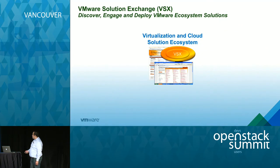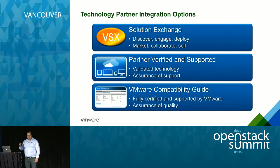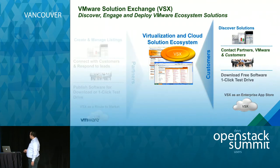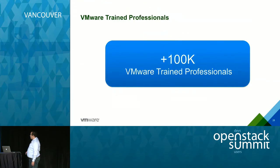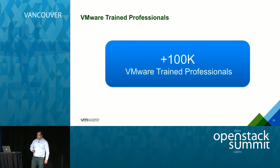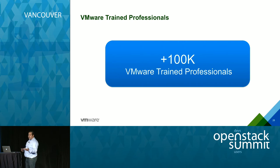We also have the VMware Compatibility Guide, available online, to check whether components you're procuring are supported and how everything works together. We have partner-verified and -supported programs providing assurance of support — first-level support from VMware and secondary-level between VMware and the partner. VMware has more than 100,000 trained professionals, giving you a lot of skills and leverage when you want to build and scale infrastructure.